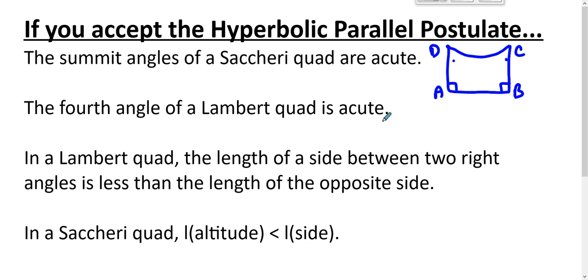In a Lambert quad or an Ibn al-Haytham quad, the length of a side between two right angles is less than the length of the opposite side. Let's talk about what we mean by that. We traditionally draw Lambert quads this way: one, two, three right angles. So we're saying that this length is less than this length—MB has to be greater than LA, and LB has to be bigger than AM.